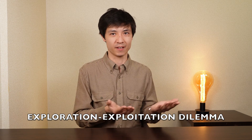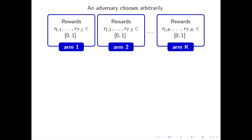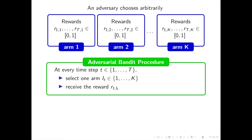The stochastic bandit problem is a major field of study within machine learning, and we know that the best possible regret is of the order of log T. A famous variant is the adversarial bandit problem. In that setting, the rewards are no longer generated from probability distributions; instead, an adversary has secretly set all the rewards r_{t,j} of all arms j at all rounds t before the procedure starts. The objective is to minimize the regret compared to the best arm.